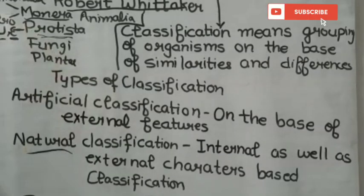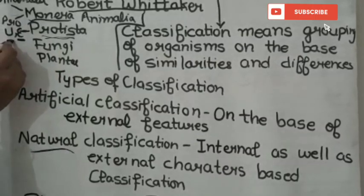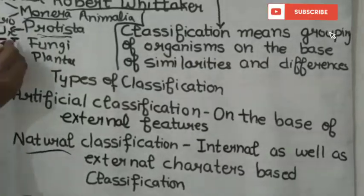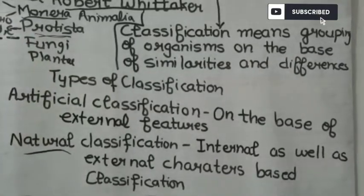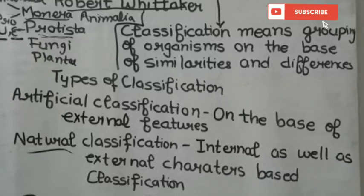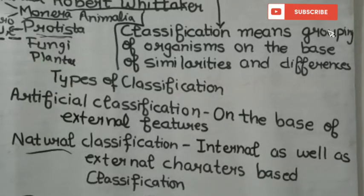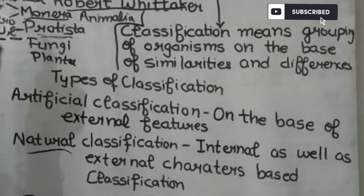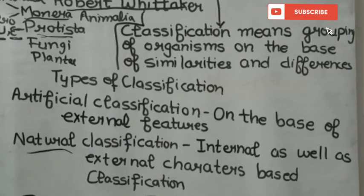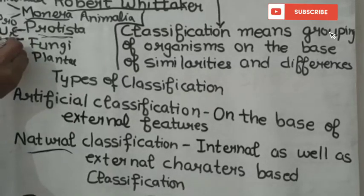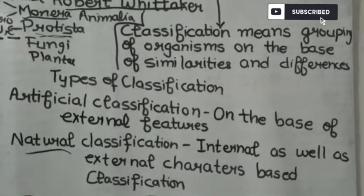Next is Kingdom Protista. Kingdom Protista means the organisms are unicellular but eukaryotic. Eukaryotic means the nucleus is well developed, whereas in prokaryotic organisms the nucleus is not developed.